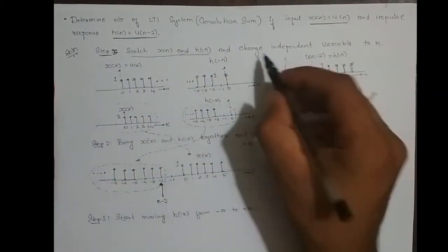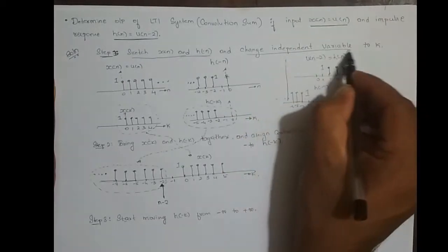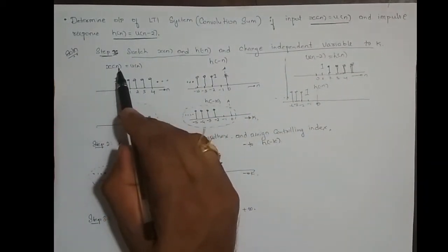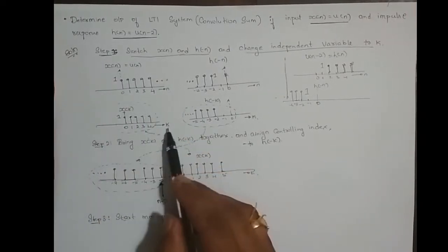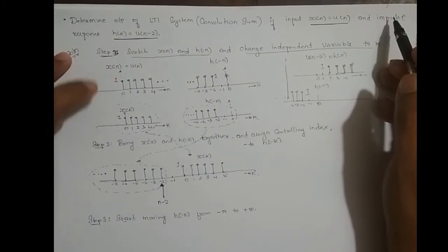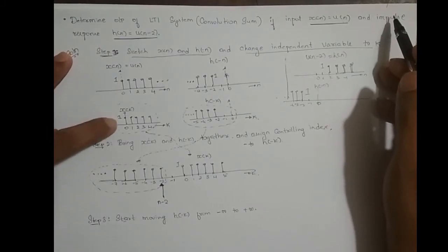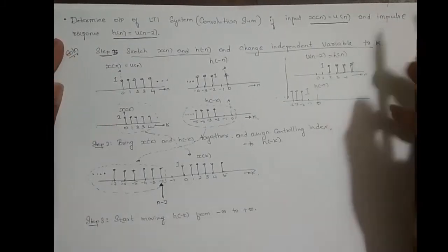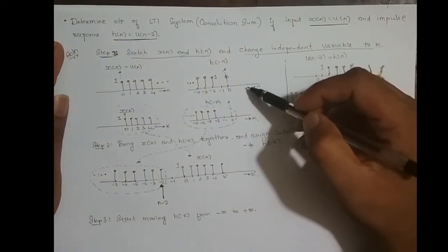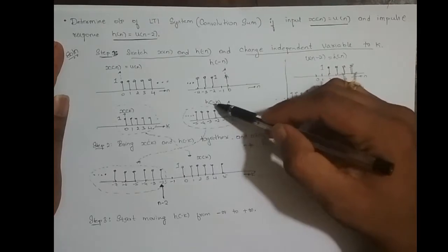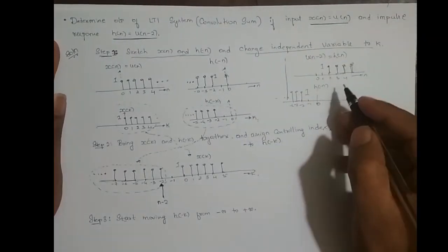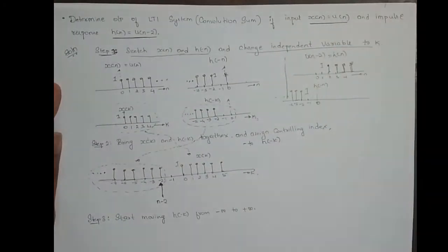Now I have sketched x(n) and h(-n). I need to change the independent variable to k. Previously it was x(n) — I simply changed n to k, wherever n appeared in the sequence. Similarly, h(-n) becomes h(-k) — that is the only difference.